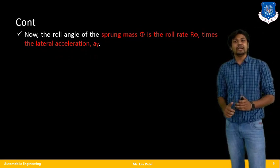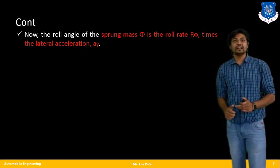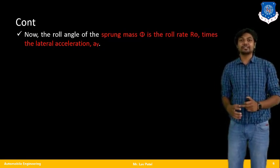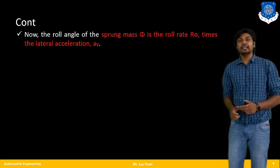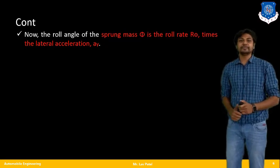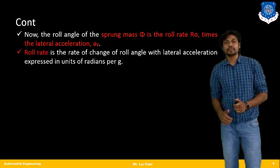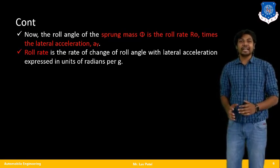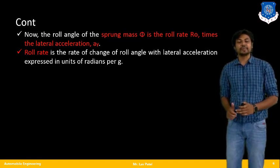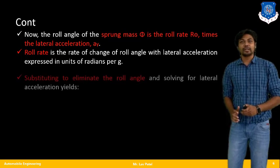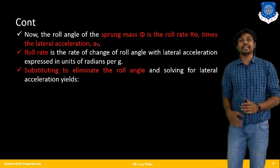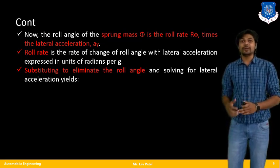Now consider the roll angle: the sprung mass roll angle phi equals the roll rate r_phi times the lateral acceleration a_y. The roll rate is defined as the rate of change of roll angle with lateral acceleration, expressed in units of radians per g.